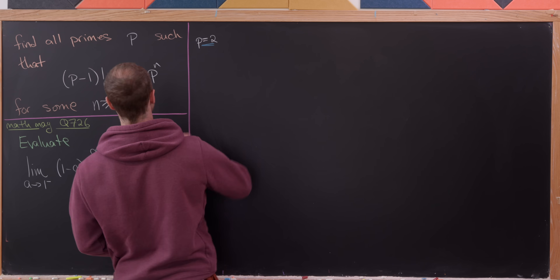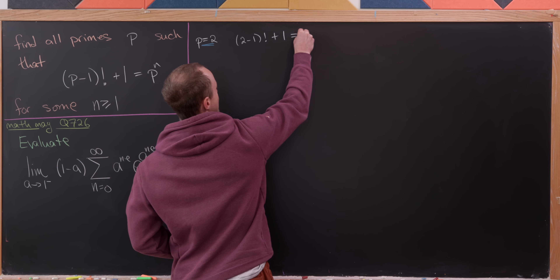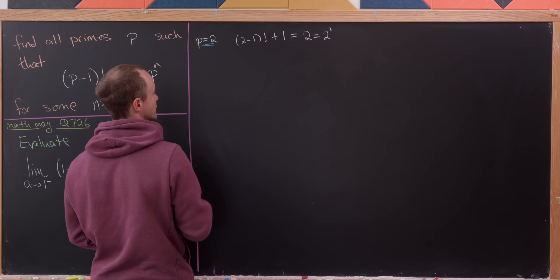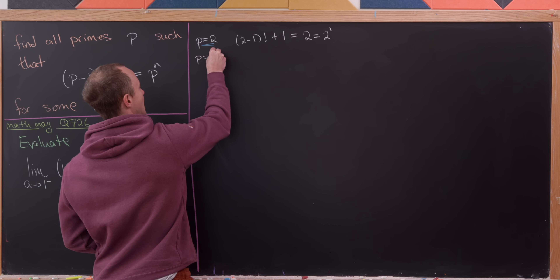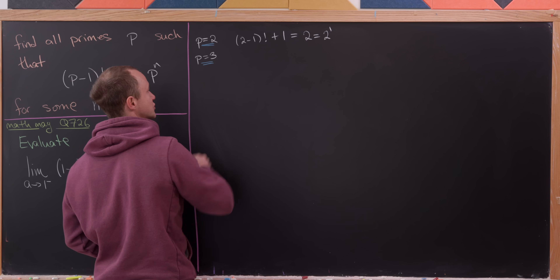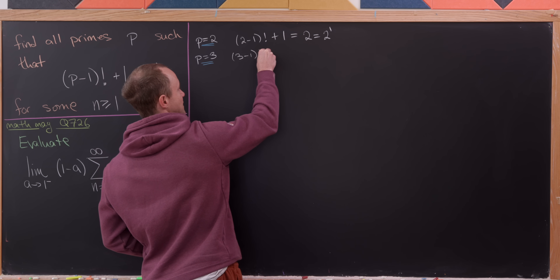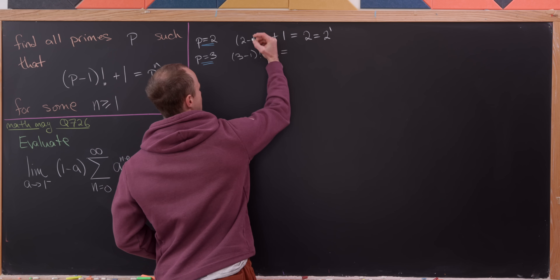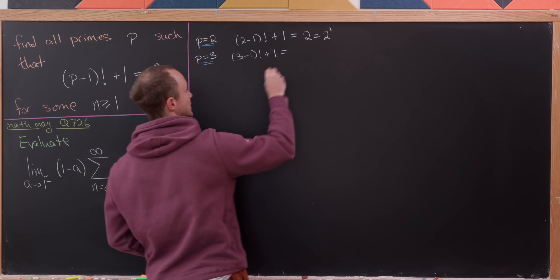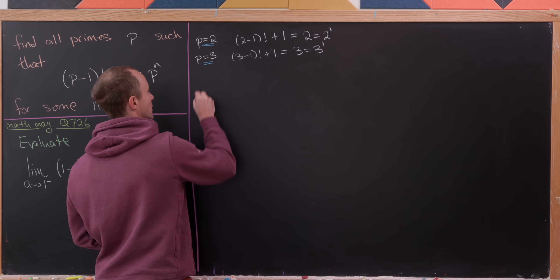When p = 2, we have (2-1)! + 1, which is pretty clearly equal to 2, which is 2^1. When p = 3, we have (3-1)! + 1, so that's 2! + 1 = 2 + 1 = 3, which is again 3^1.